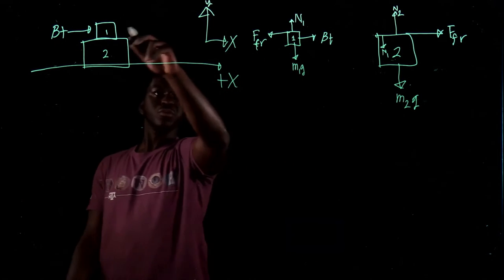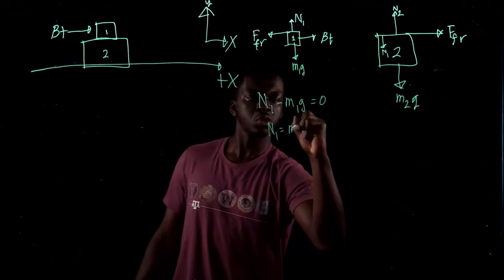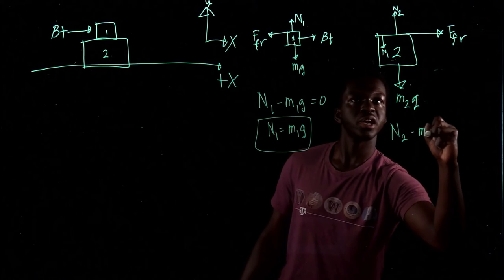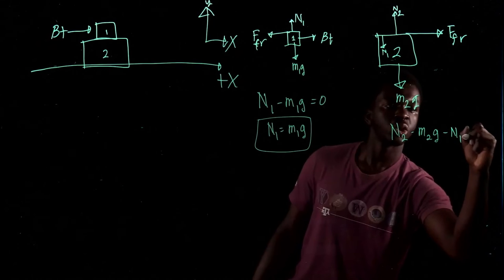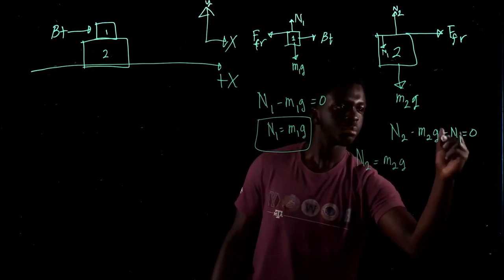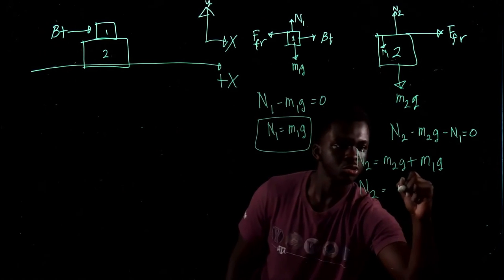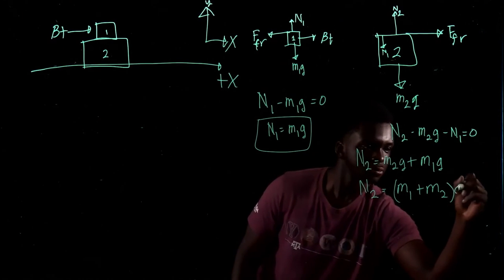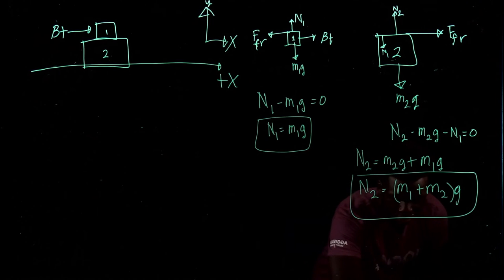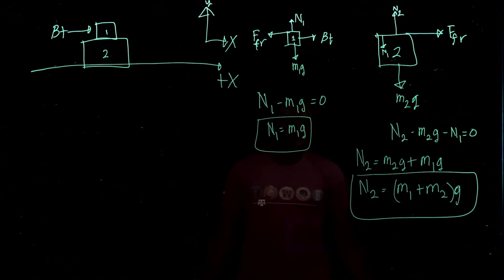Now finding the forces on each block. In the y direction, block one is not moving vertically, so N1 minus M1G equals zero, therefore N1 equals M1G. For block two in y: N2 minus M2G minus N1 equals zero, so N2 equals M2G plus N1, which is M2G plus M1G, simplifying to N2 equals (M1 plus M2)g.